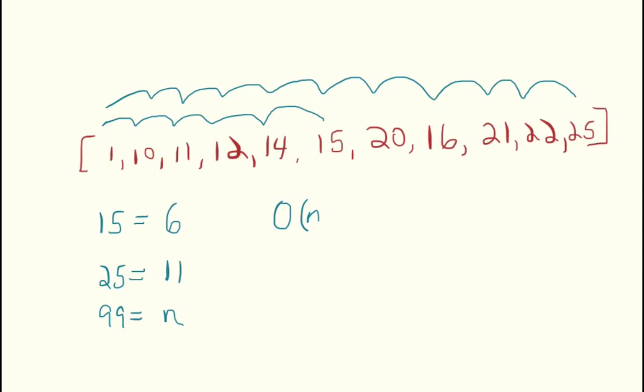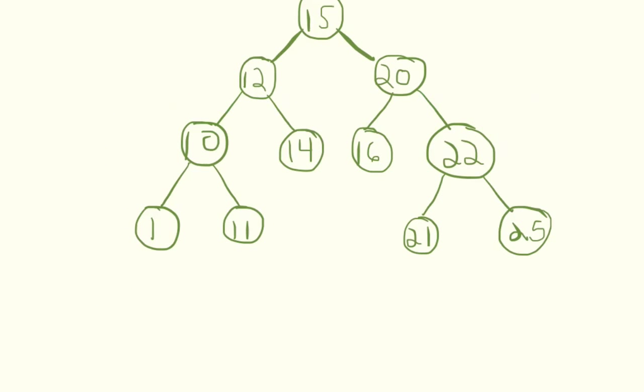For linear search through an array like this, if you're not taking it for an algorithm class and you don't know what that's talking about, don't worry. It's just called big O notation.